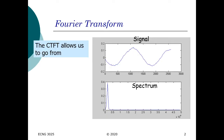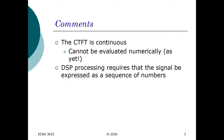The continuous time Fourier transform, as we saw in the last lecture, allows us to move from a time domain signal to the spectrum of its signal, which is basically the frequency domain representation of itself. Now the continuous time Fourier transform cannot be evaluated numerically as yet — it exists in continuous time, but we need to get this into discretized time. Any DSP process requires it to be in a discretized form, being a sequence of numbers.